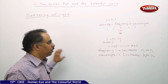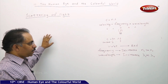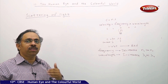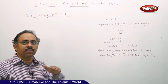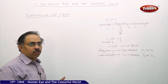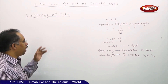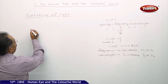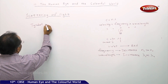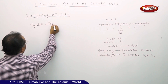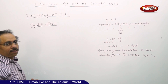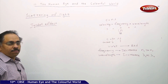Now there is one more concept: why does the sun appear red during sunrise and sunset? To understand that, we have an effect called the Tyndall effect. Tyndall studied the scattering of light phenomenon basically.